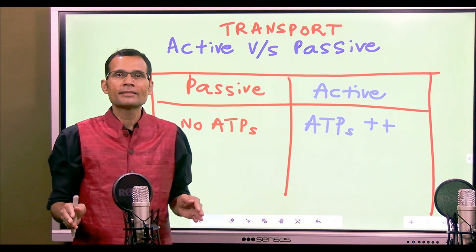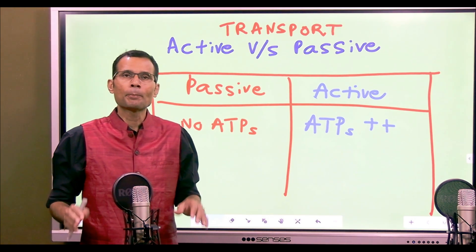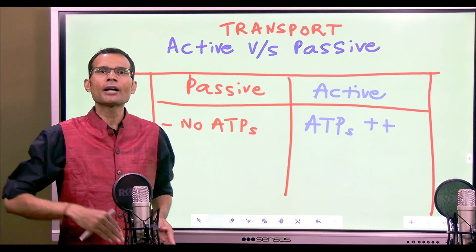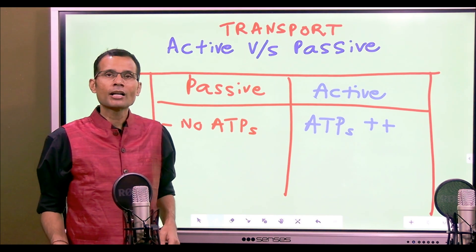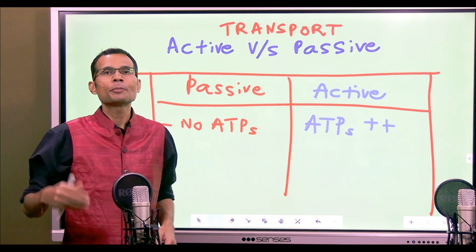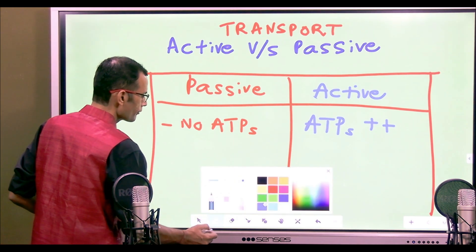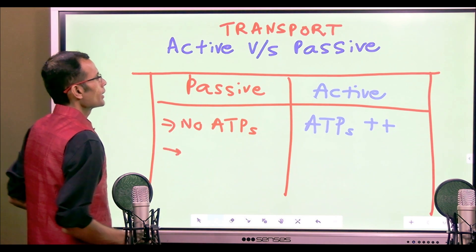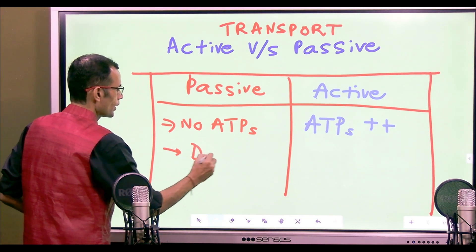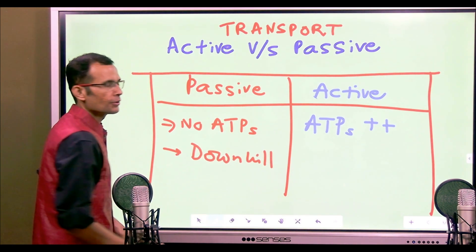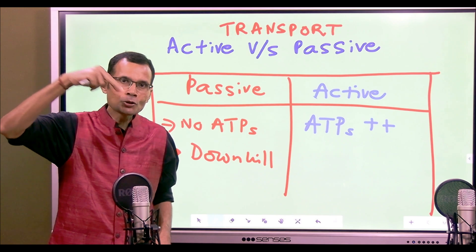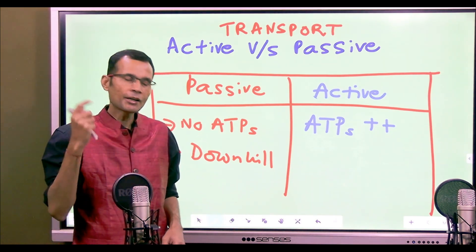Diffusion is a passive transport — whether simple or facilitated, it does not require ATPs. Primary active transport, like the sodium-potassium pump, or secondary active transports — ATPs would be consumed. The second important differentiating feature is that passive transports are downhill transports, meaning net transport occurs from high to low concentration.